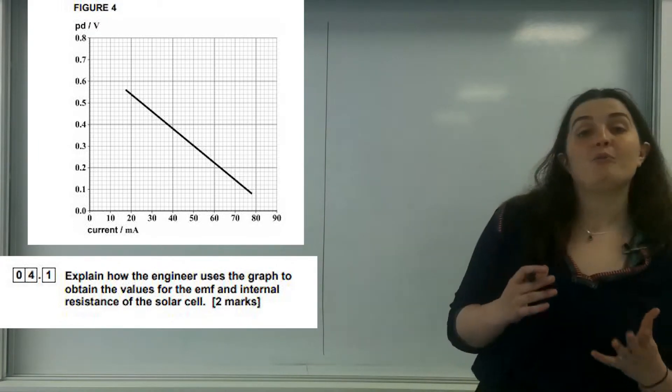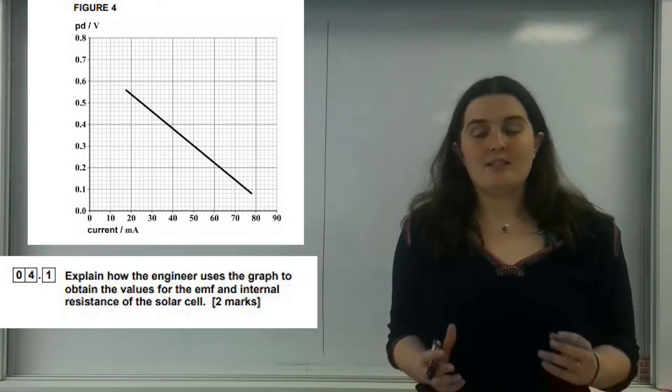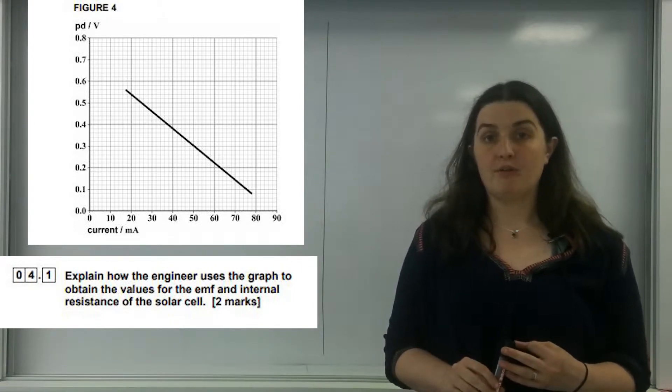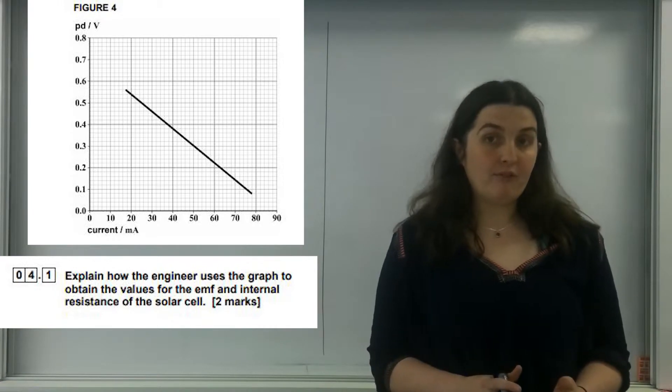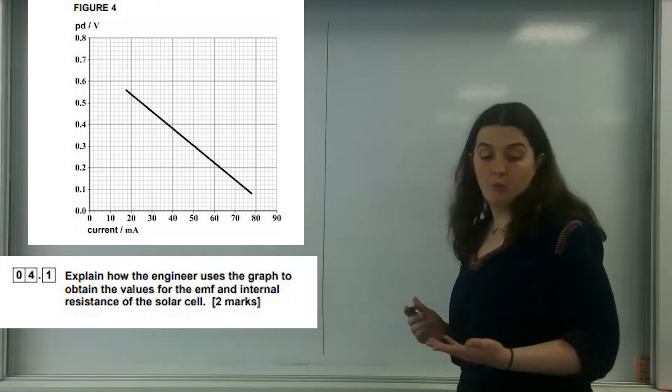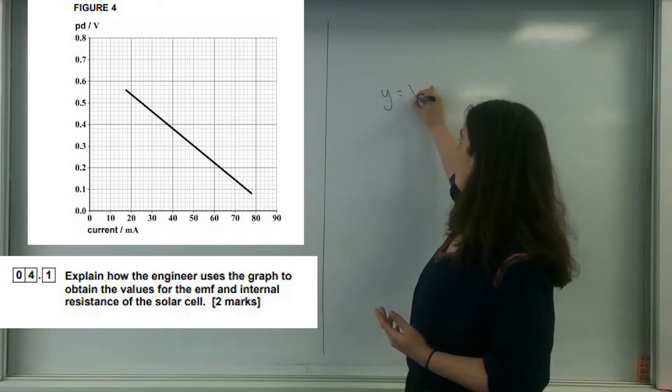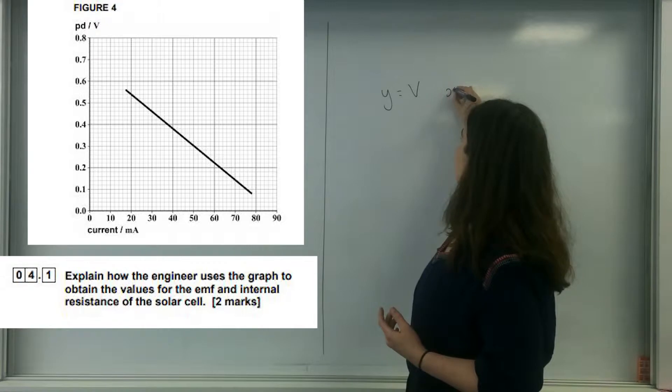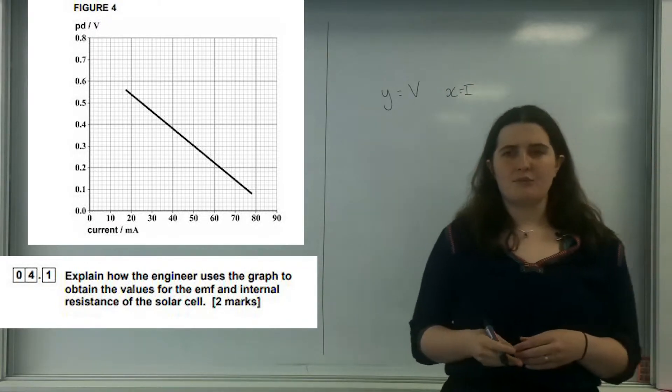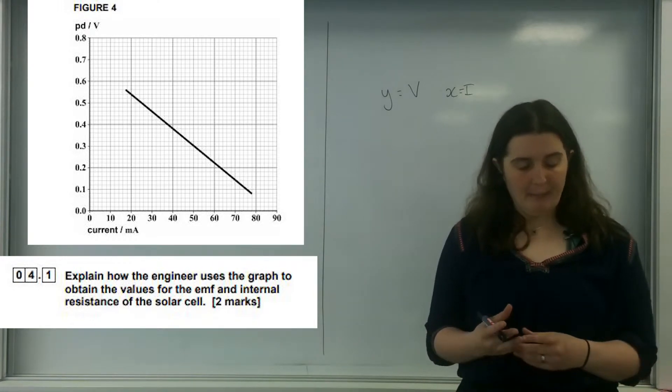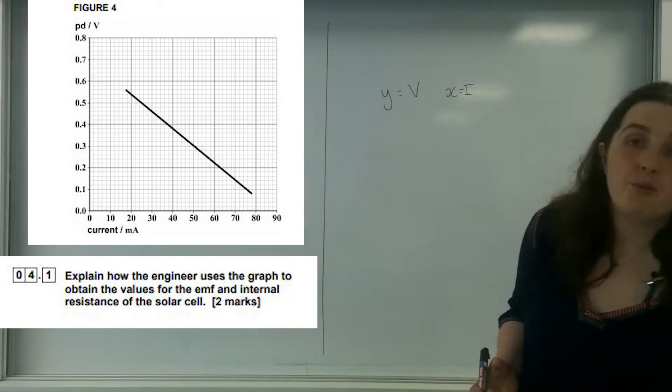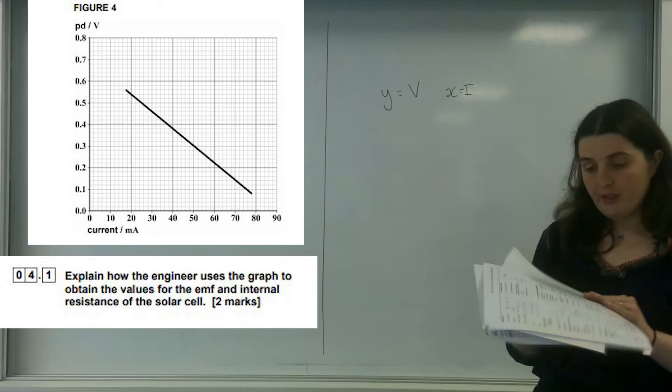If you are normally given a graph, the three things that are actually really important about the graph are the intercept, the gradient, and the area under the graph. On my y-axis, I have got the potential difference, and on my x-axis, I have got current. I've got a straight line, but it is a negative straight line. And they've mentioned internal resistance and EMF.